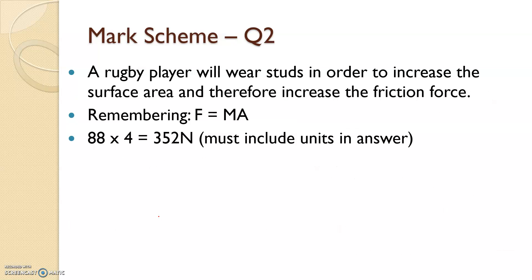And lastly, F equals MA. 88kg times 4 meters per second squared equals 352 Newtons.